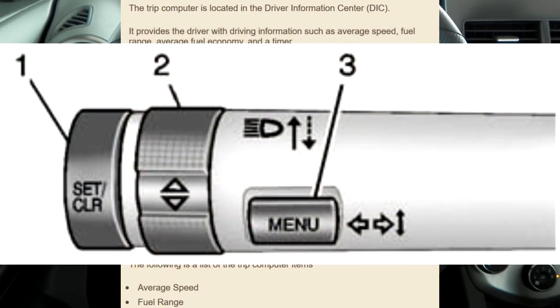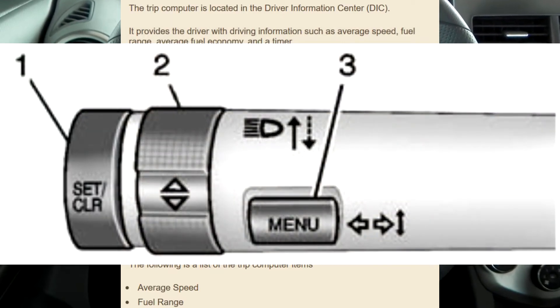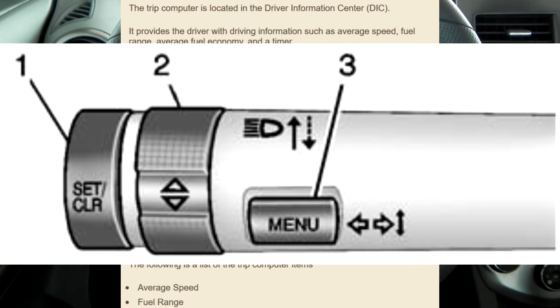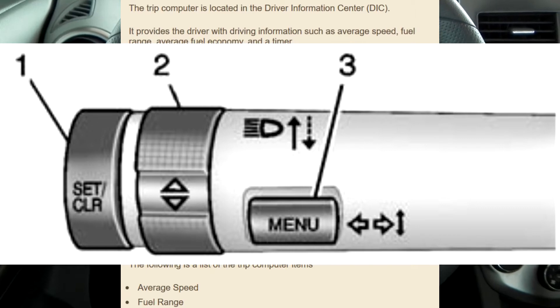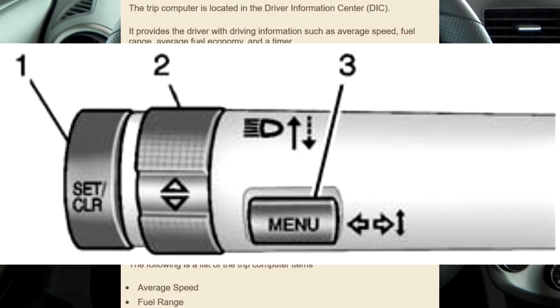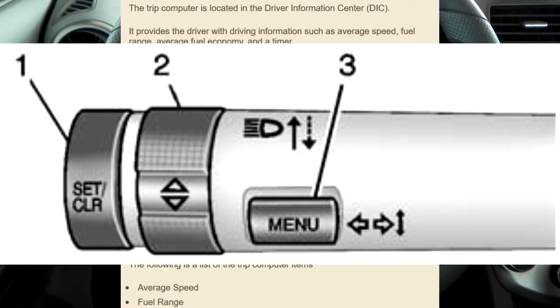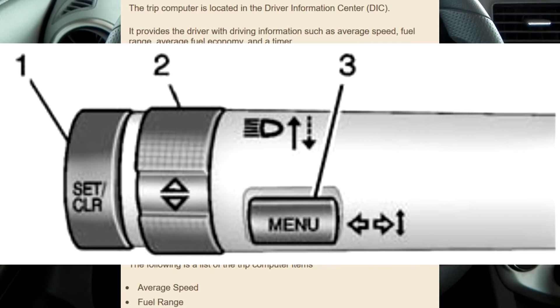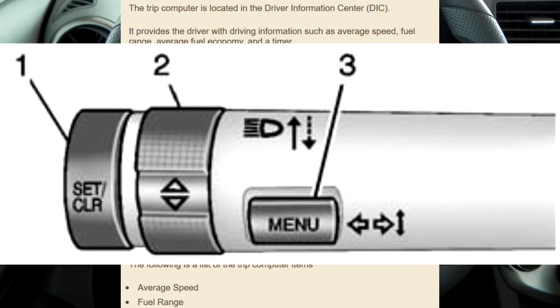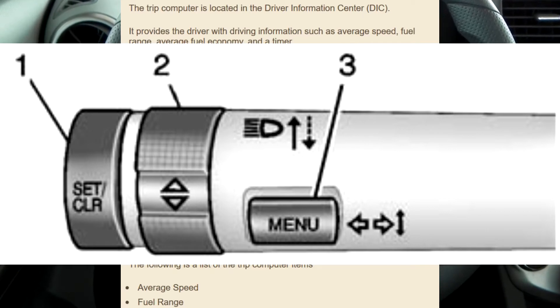1. Set/CLR — press to set or clear the menu item displayed. This is not used to reset the Trip odometer. To reset the Trip odometer, use the reset button on the tachometer in the instrument cluster.